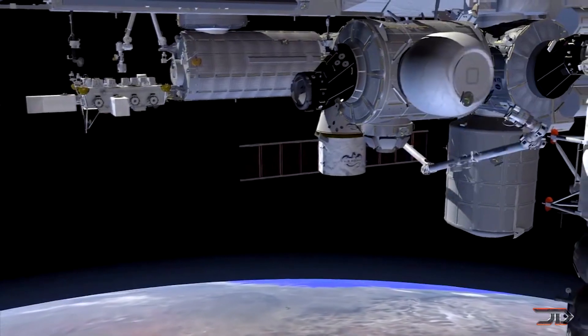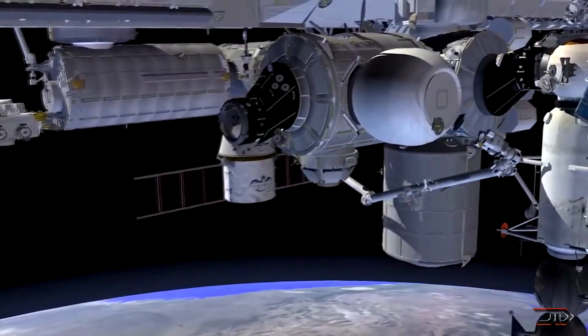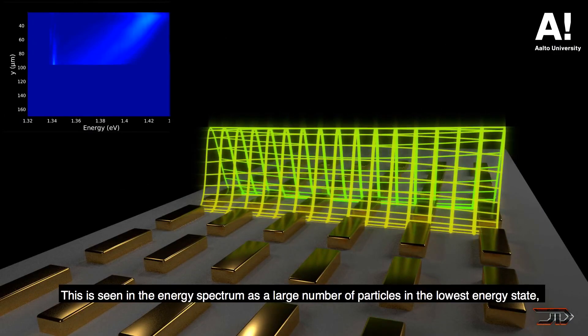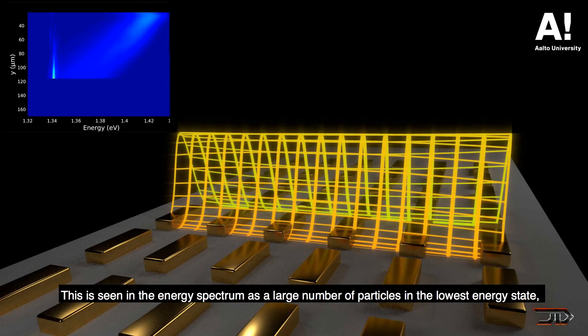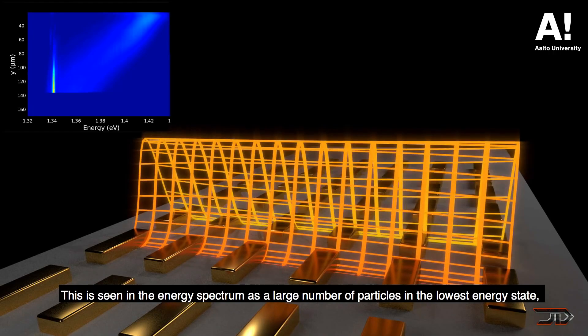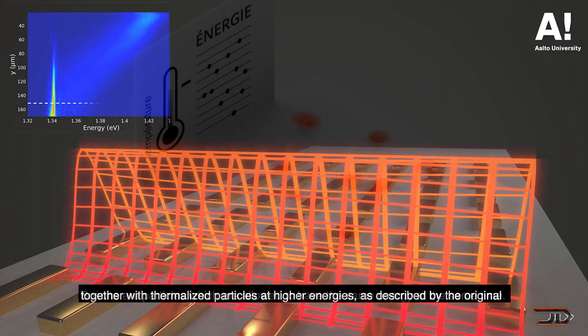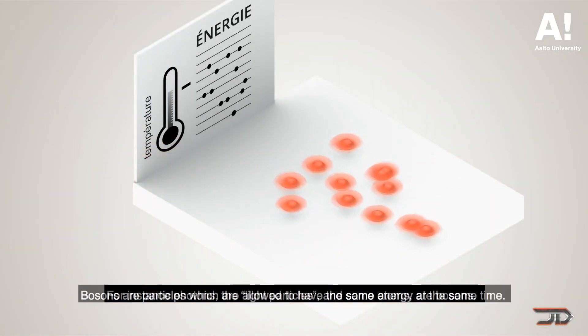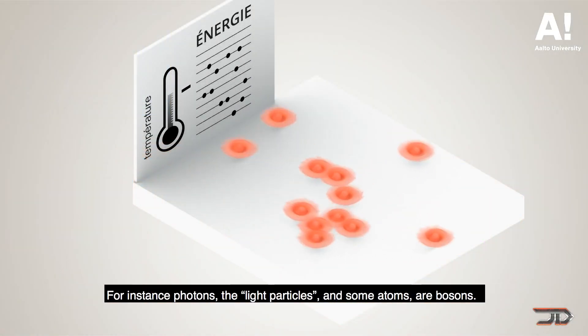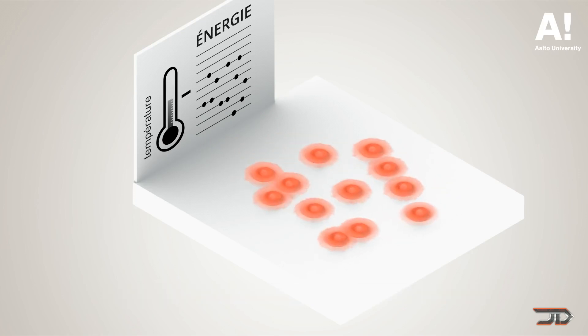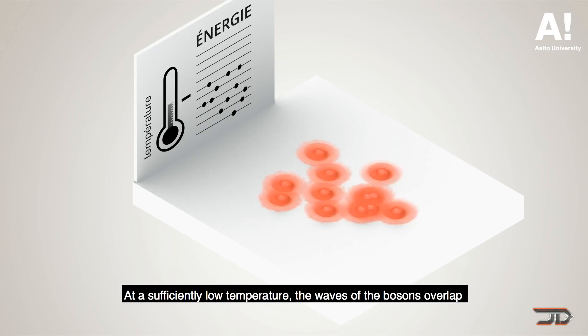Now, one of the most amazing experiments involved a fifth state of matter in microgravity, called a Bose-Einstein condensate, which involves ultra-cold temperatures. Now, BECs are really interesting, and they exhibit properties which are typically displayed only by individual atoms, and it could shed some light on quantum mechanics and technologies such as ultra-precise sensors, which could detect things such as dark energy or gravitational waves.